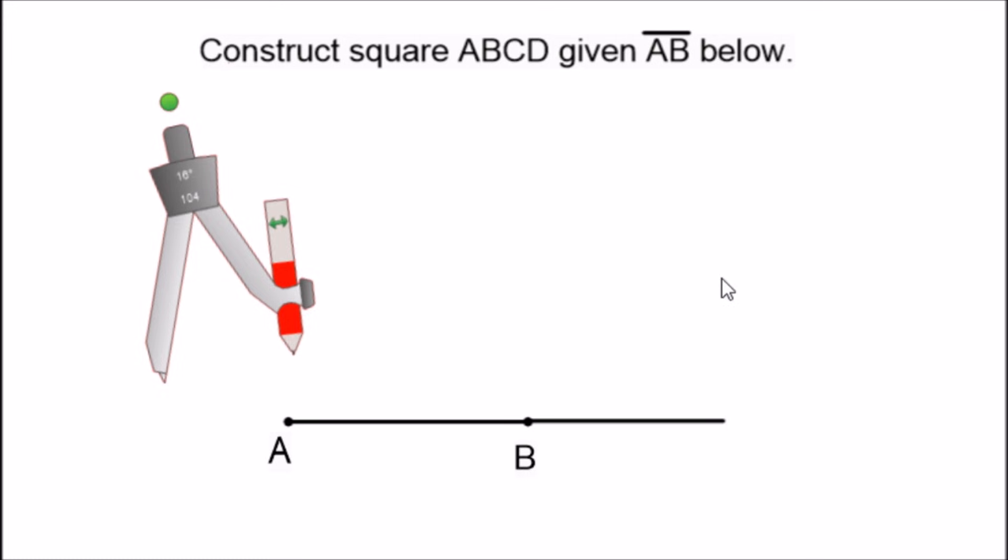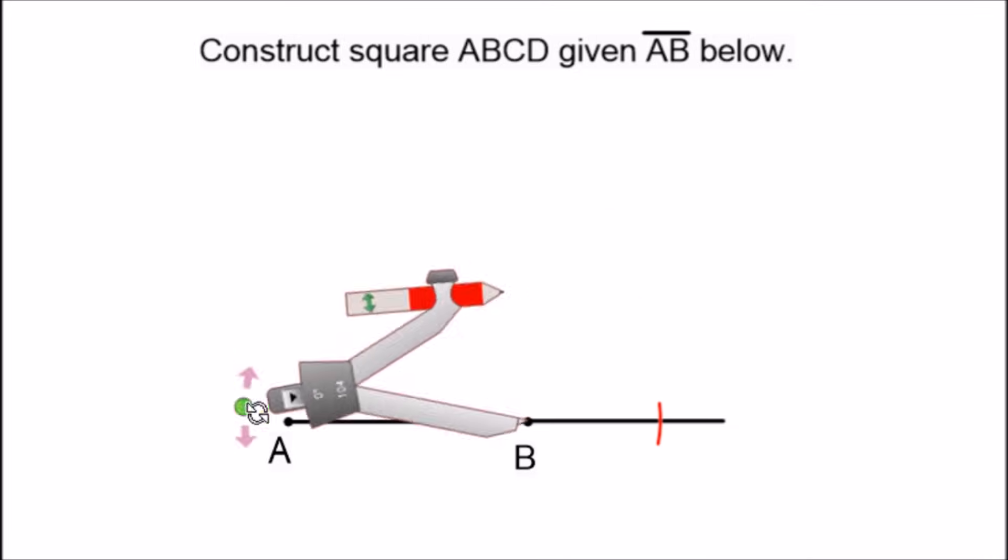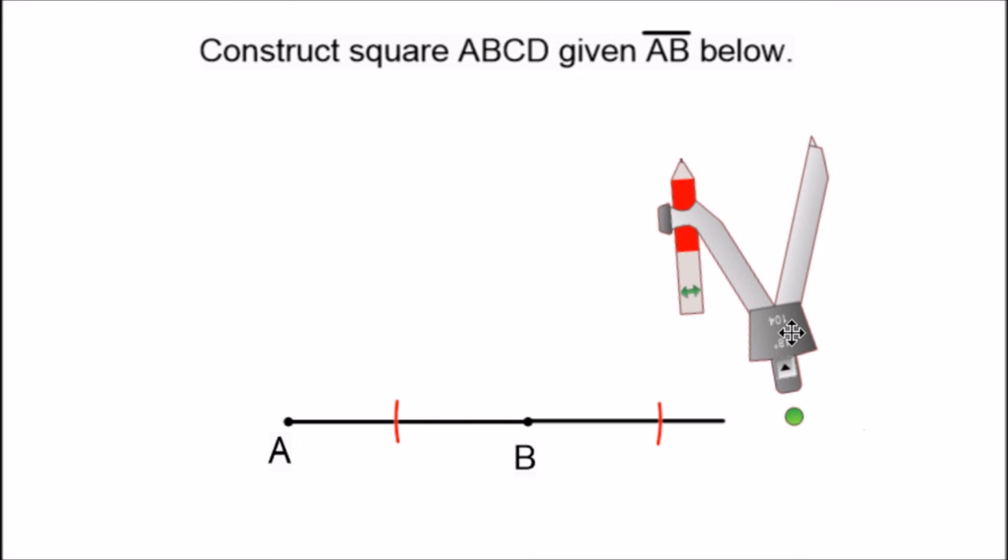Next, what we want to do is set the compass on point B and construct a line perpendicular to this segment through point B. So we're going to swing the arc from point B on the right side and do the same thing on the left side. Now we have two new intersection points here.